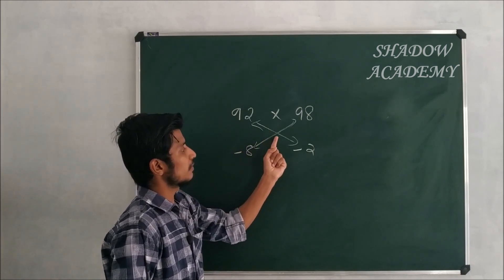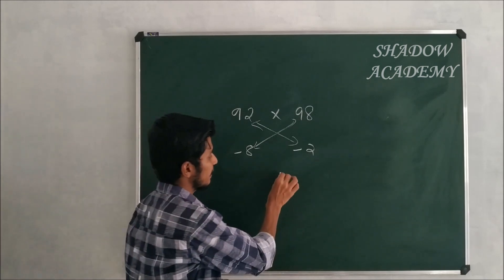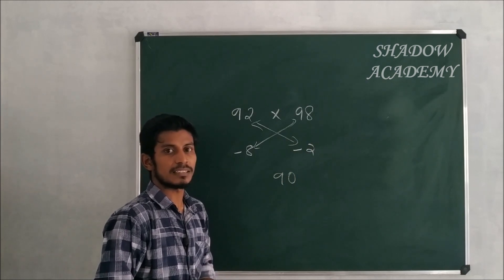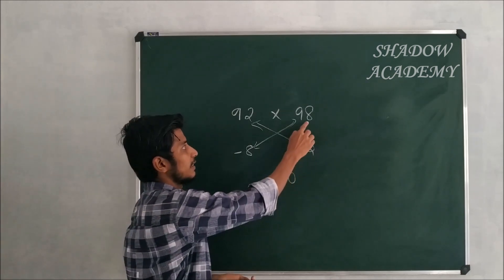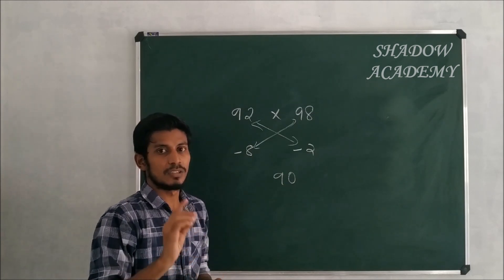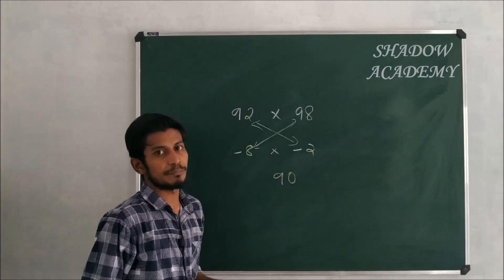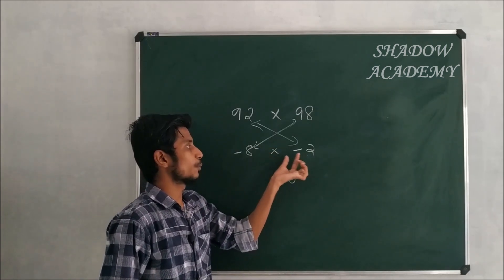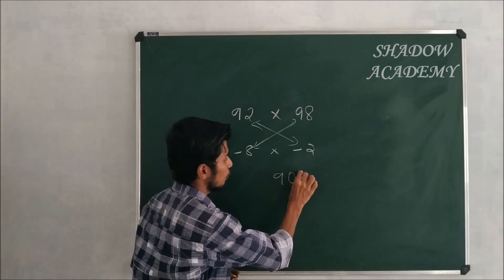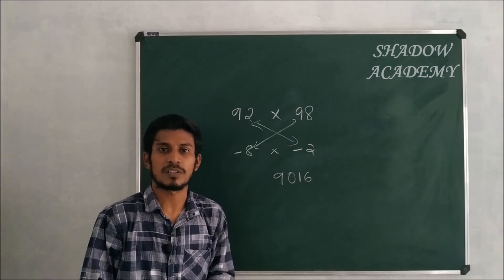Here, 92 plus (minus 2) = 90. And 98 plus (minus 8) = 90. Then, minus 8 × minus 2 = 16. So 92 × 98 = 9016.